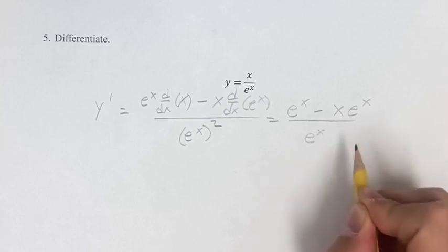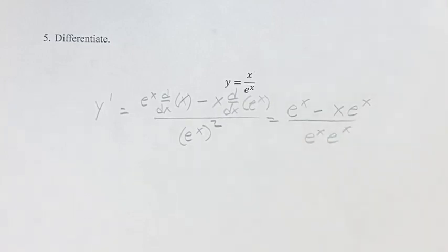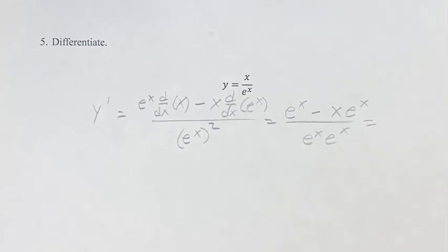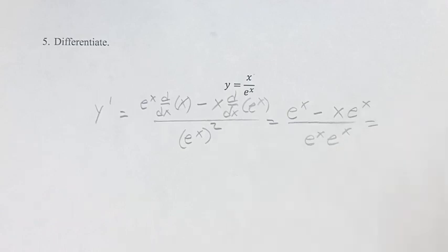All of this is over e to the x times e to the x. You could write this as e to the 2x, but we'll keep it as e to the x times e to the x because it will allow us to simplify one step further.